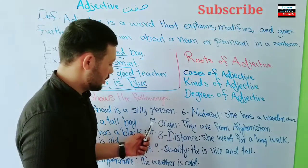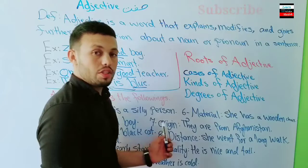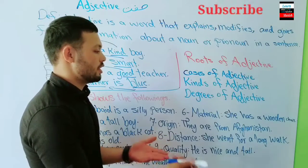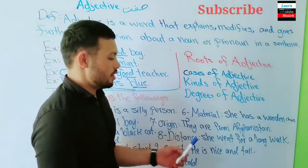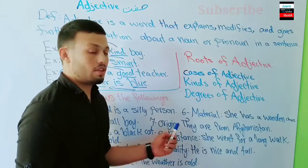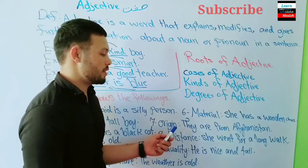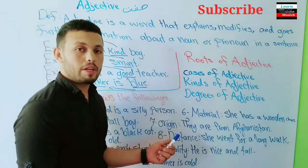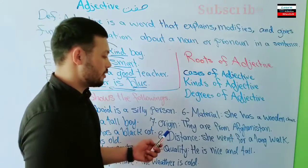Number seven: origin adjectives show where someone or something is from — 'asaliyat' in Dari. For example: 'They are from Afghanistan' or 'She is from America' — 'American' is the origin adjective.